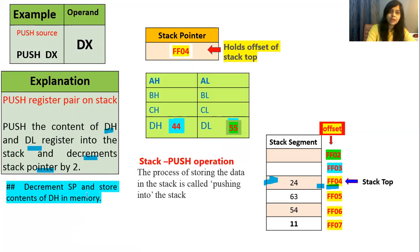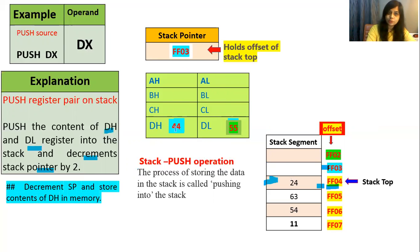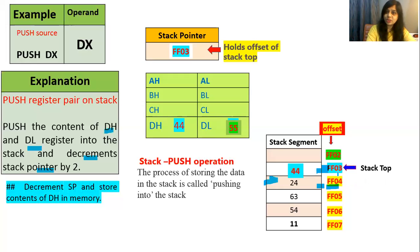The push instruction will first decrement the stack pointer by one, then the contents of DH register will get stored at the indicated address. So the stack pointer decrements to FF03, meaning it is now pointing to the FF03 memory location. The data from DH register gets transferred to that address. Now the stack top has changed to FF03, and this is stored in the stack pointer.